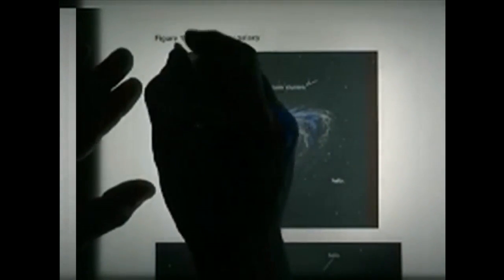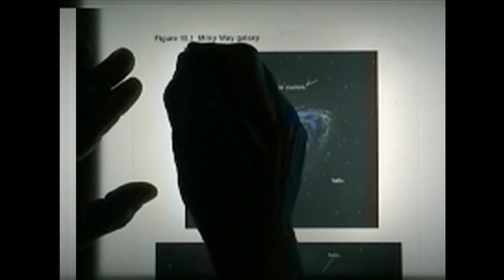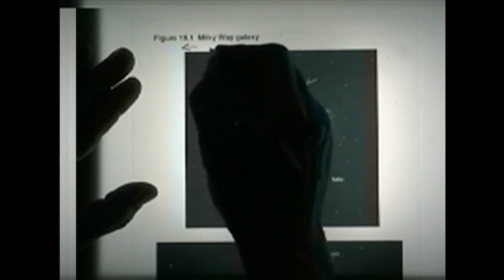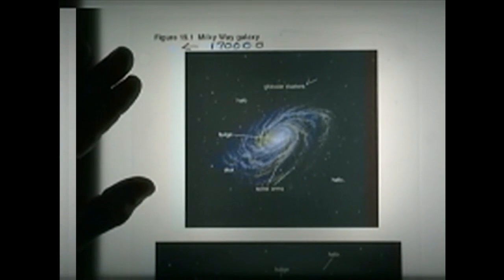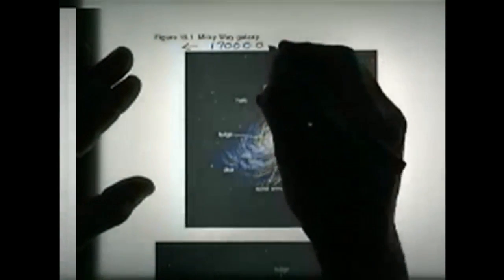Now, we have 1,700 times 100, so that is 170,000 light-years across.